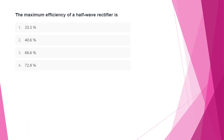We will select the rectifier. Here we will look at a few MCQ questions — important questions and previous questions. The first question: what is the maximum efficiency of a half-wave rectifier? Options: 33.3%, 40.6%, 66.6%, 72.9%. The answer is option 2: 40.6%.